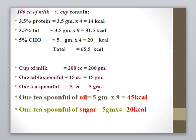One tablespoonful equals 15 grams or 15 cc, while one teaspoonful is 5 grams. For oil, one teaspoonful is 5 grams multiplied by 9 kilocalories per gram, so each teaspoonful of oil produces 45 kilocalories. Sugar produces 20 kilocalories per teaspoon.